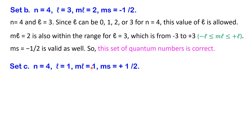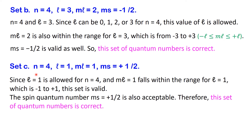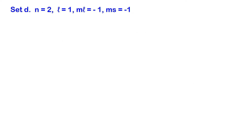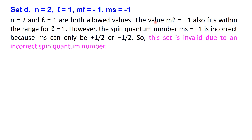For the next set: n=4, l=1, ml=1, ms=+½. Since l=1 is allowed for n=4, and ml=1 falls within the range −1 to +1 for l=1, and ms=+½ is valid, this set is correct. For the following set: n=2, l=1, ml=−1 are all valid, however ms=−1 is incorrect because ms can only be plus one-half or minus one-half. So this set is invalid due to an incorrect spin quantum number.